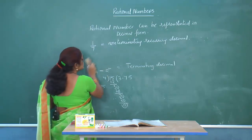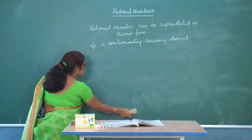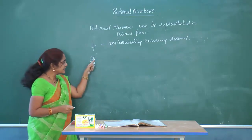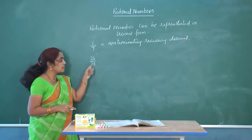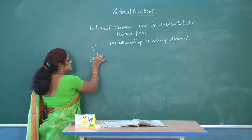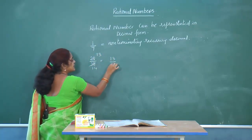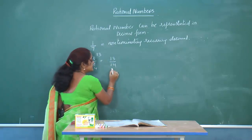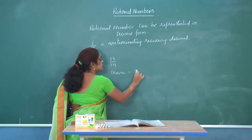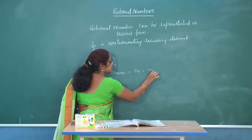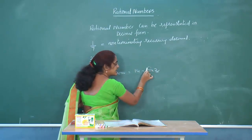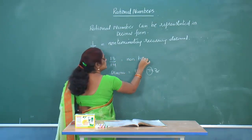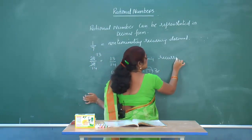For 26/28, first convert to simplest form. Both end in even digits, so they share factor 2: 26/28 = 13/14. Now in standard form, the denominator is 14 = 7×2. Since 14 has a prime factor of 7 (other than 2 or 5), 13/14 is a non-terminating recurring decimal.